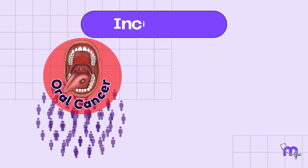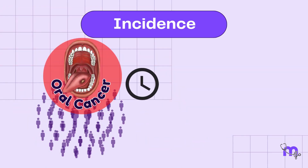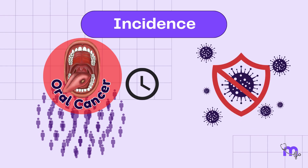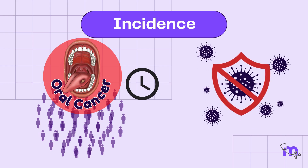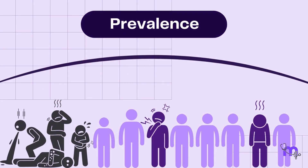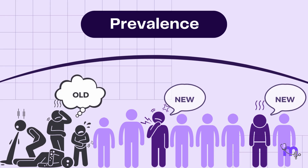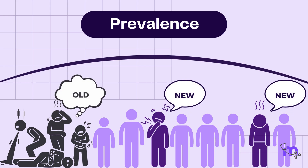As you can see, the incidence is not influenced by the duration of the disease. It is generally restricted to acute conditions. The incidence of oral cancer per year is the incidence of the disease in a given population at a given point or period.